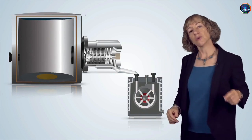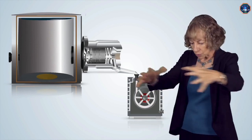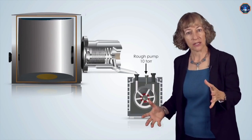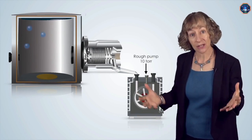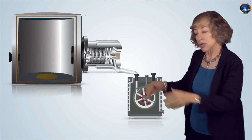So we are going to use the mechanical pump in two different ways. First, to rough out the vacuum system from atmospheric pressure to about 10 torr so that we can turn on the turbo pump afterwards. Second, we use that mechanical pump to back the turbo pump.